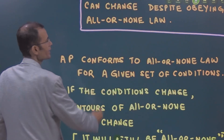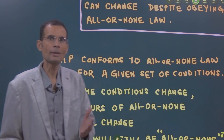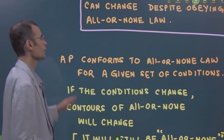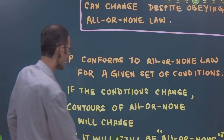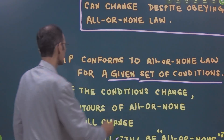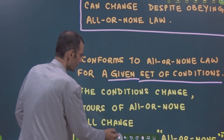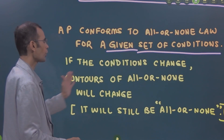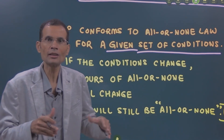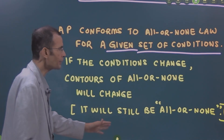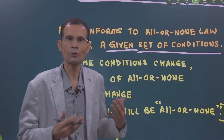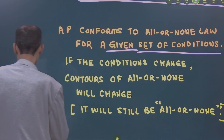If you want to write this answer in the exam, you may start by saying that action potential conforms to all or none law for a given set of conditions. That's the important part — given set of conditions. If the conditions change, then the contours of all or none will change, and it will still be all or none. This is just for the answer. Now let's see the explanation.